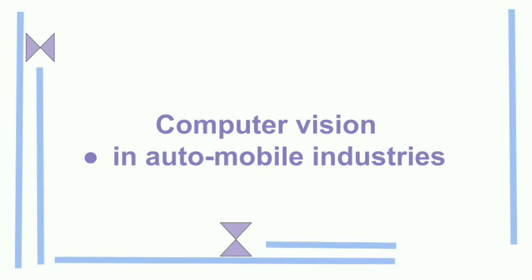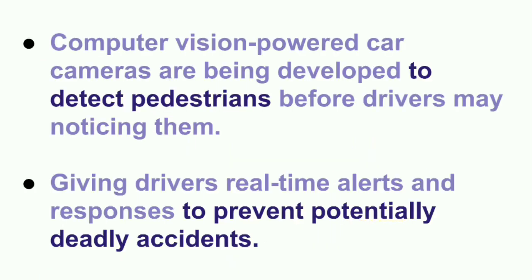Computer vision in automobile industries — computer vision powered car cameras are developed in order to prevent potentially deadly accidents. With these computer vision powered car cameras, we can detect pedestrians before drivers may notice them. This camera will detect the pedestrians and make an alert — vibration, sound, or visual alerts — and based on those alerts, we can take necessary action.